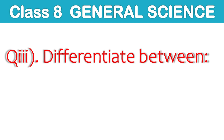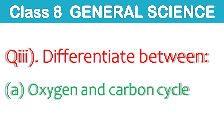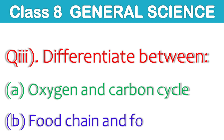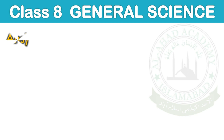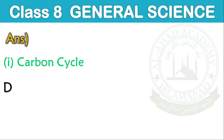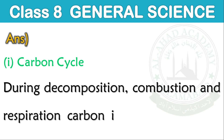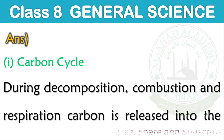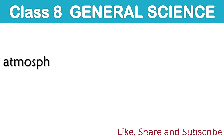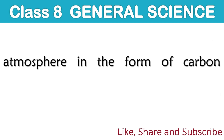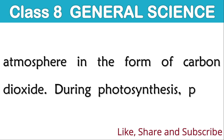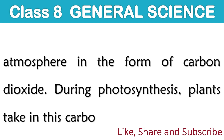Question number 3: Differentiate between carbon cycle, oxygen cycle, food chain, and food web. Answer — Carbon cycle: During decomposition, combustion, and respiration, carbon is released into the atmosphere in the form of carbon dioxide. During photosynthesis, plants take in this carbon dioxide.